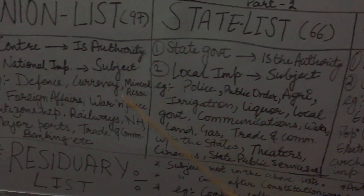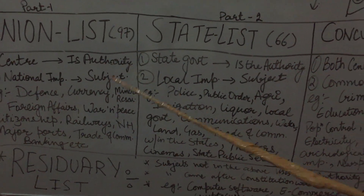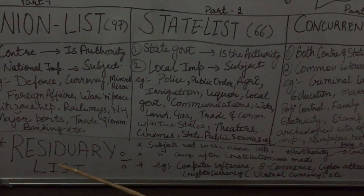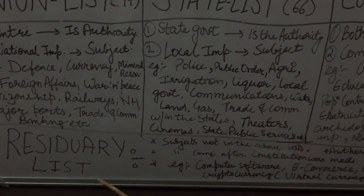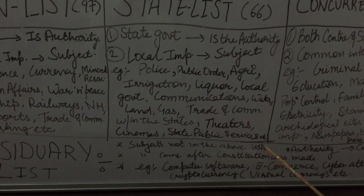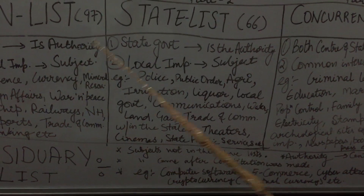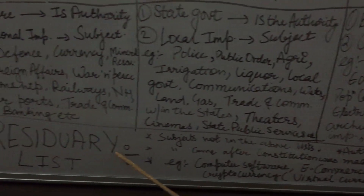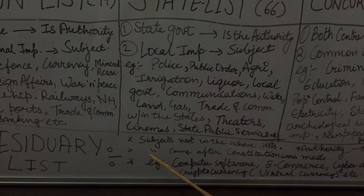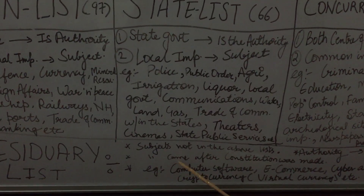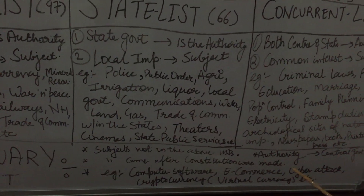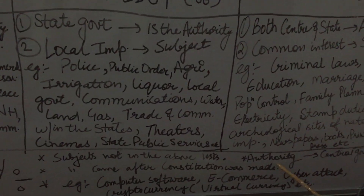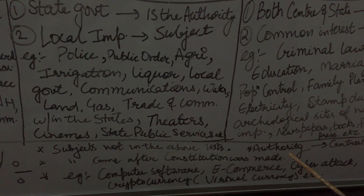Ab kuch subjects tum log sochoge aise bhi hain jo in lists ke andar nahi cover hote. Toh woh subjects kaun si list ka part bante hain? They become the part of the residuary list — subjects not in the above mentioned lists: union, state, aur concurrent mein jo subject nahi hain, woh residuary list ke andar aate hain. Yeh woh subjects hain jo came after the constitution was made — jab hamare samvidhan ban chuka tha, uske baad jo changes aaye, technology aayi, unke regarding laws hain.